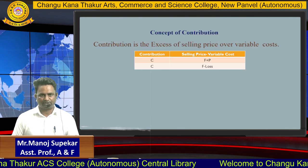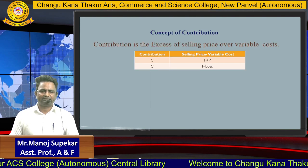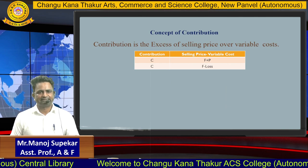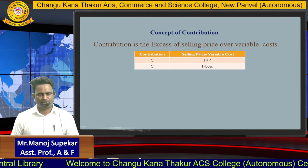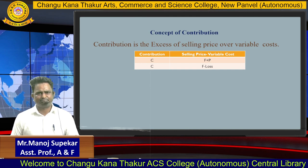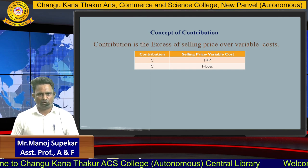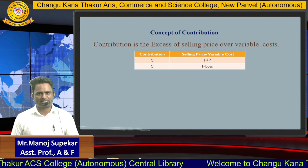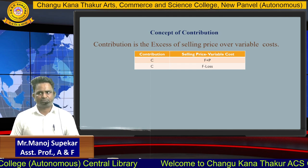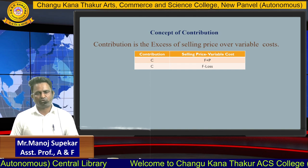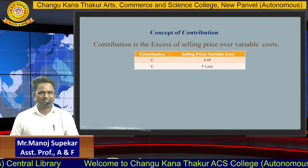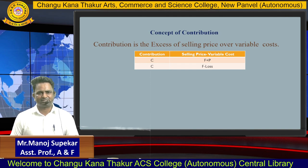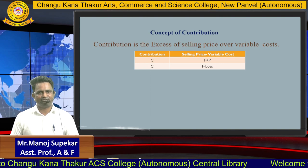The second concept is contribution. Contribution is the difference between selling price and variable cost. It is known as contribution. The formula is: Contribution = Fixed Cost + Profit. You can also understand it as: Contribution = Fixed Cost minus Loss. There is one more formula — Contribution equals Fixed Cost when profit is zero. So, contribution is simply the difference between your selling price and variable cost.